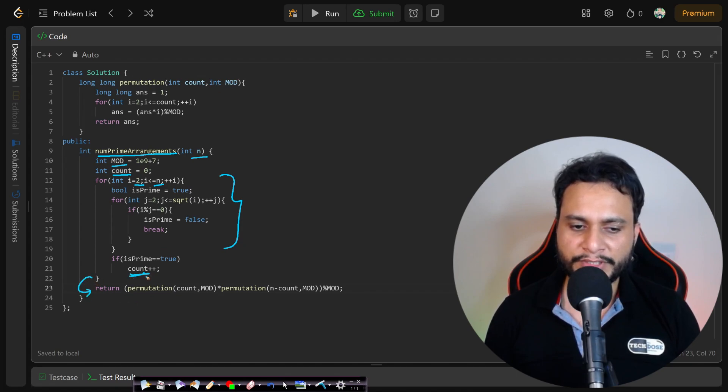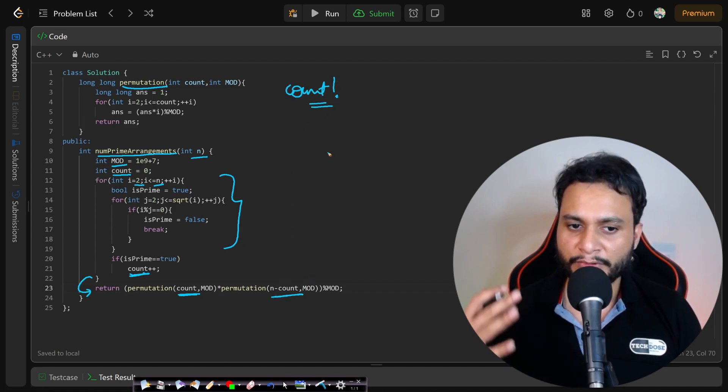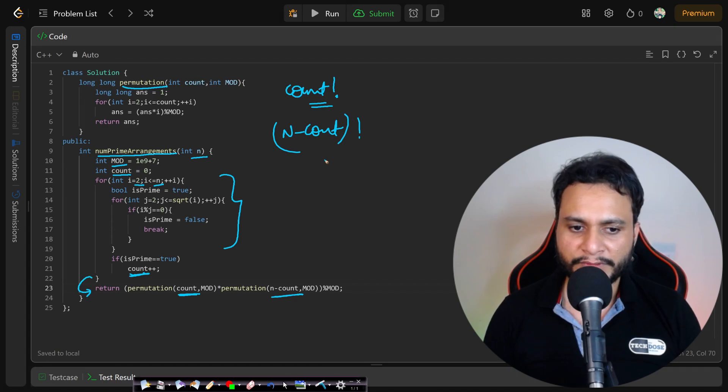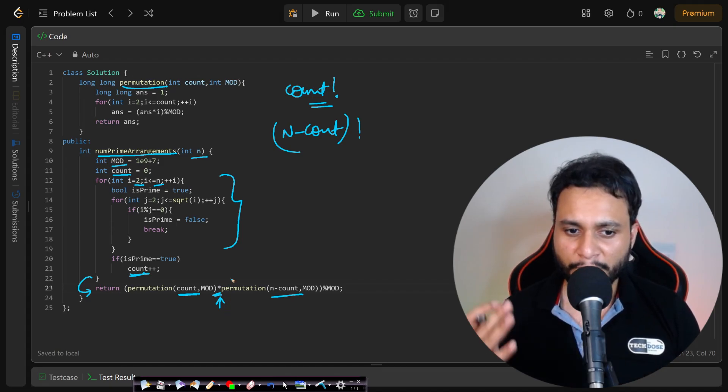Once we're done and come out of the loop, count equals the number of prime numbers. We need to find count factorial using the permutations function, which calculates n factorial. Then we get the number of ways to arrange the non-primes, which is (n minus count) factorial, where n is the total number of items. After this, you multiply them to get all possible ways.